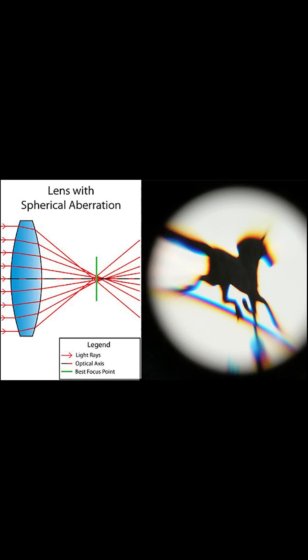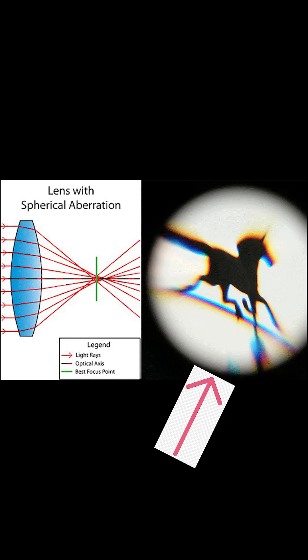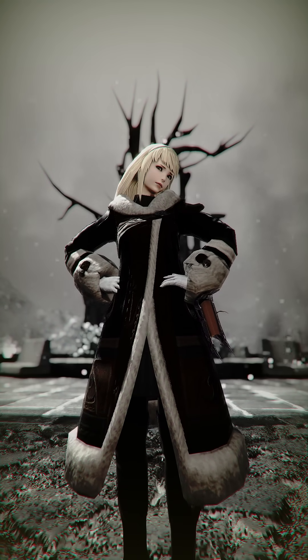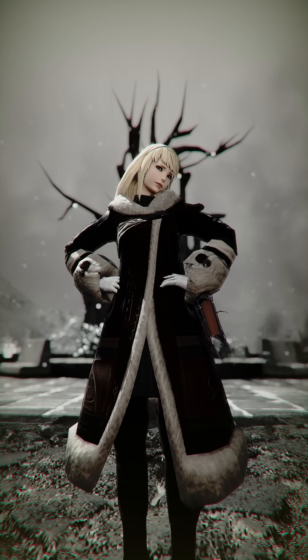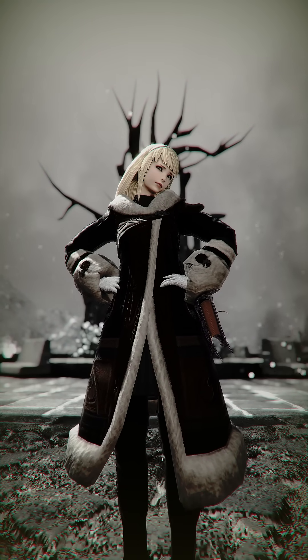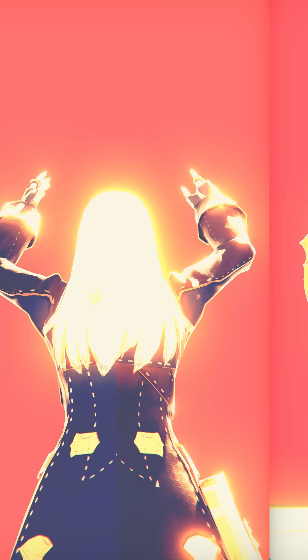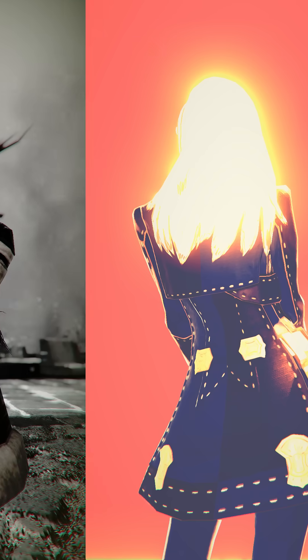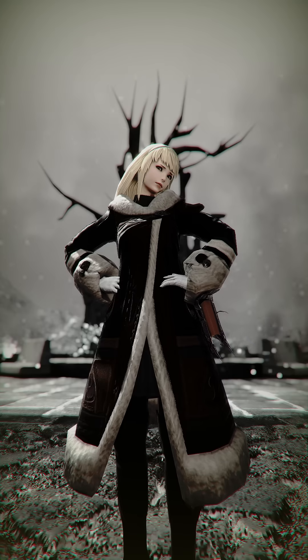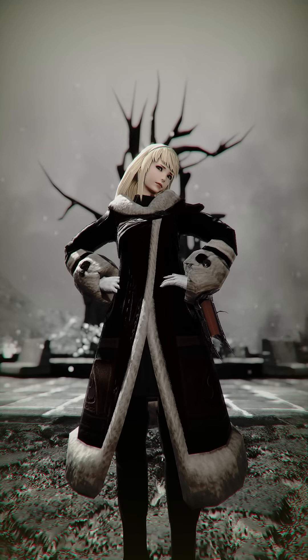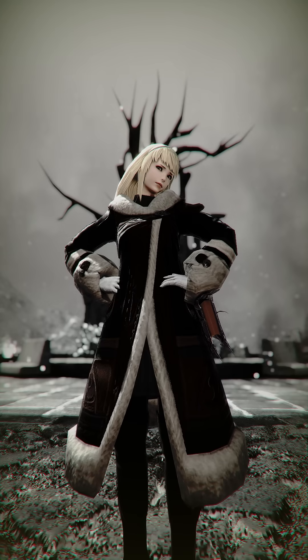Lastly, chromatic aberration generally only occurs on the edge of photographs, so we multiply our offsets by the distance from the center of the screen. Chromatic aberration is a useful visual indicator to show that something is wrong and is most often used in games to make player damage feel more impactful.